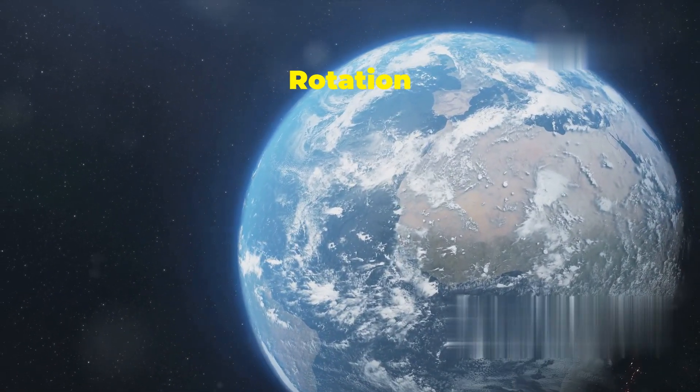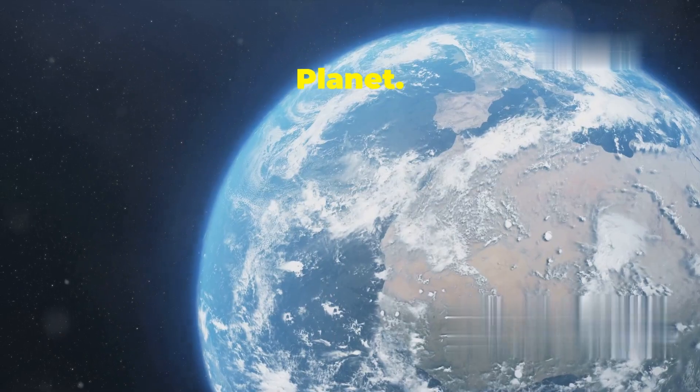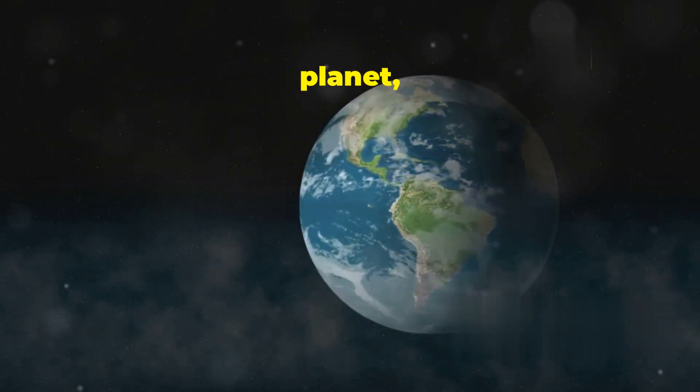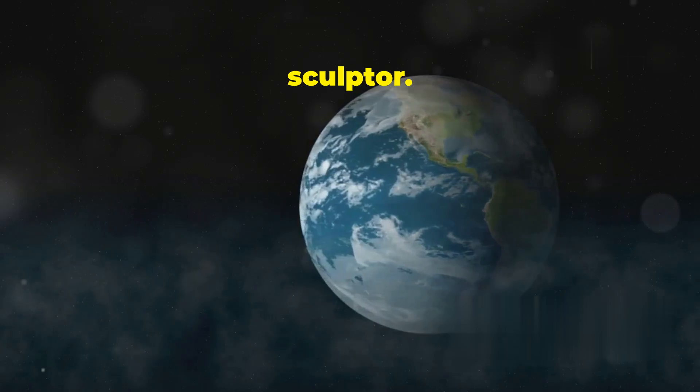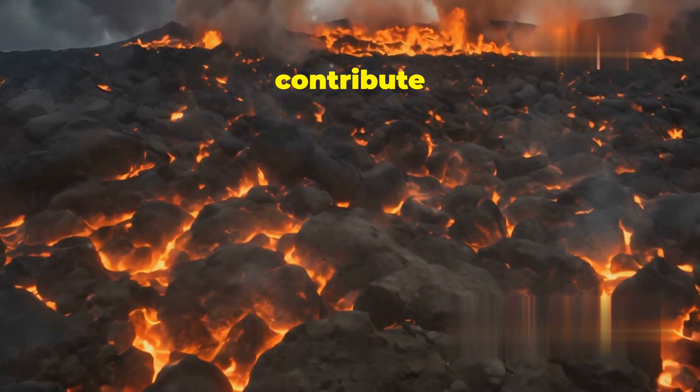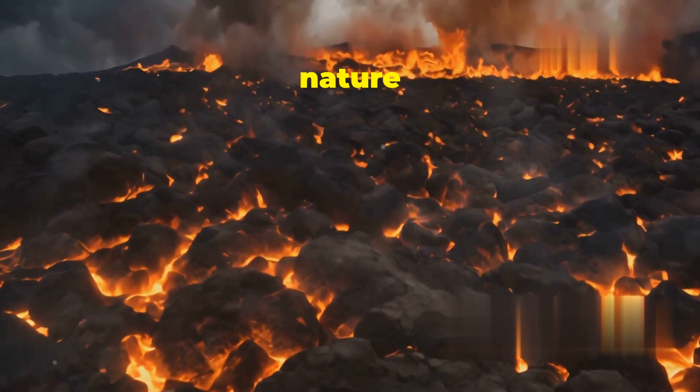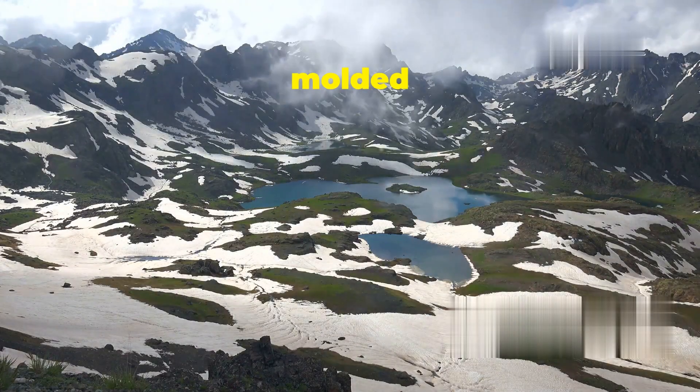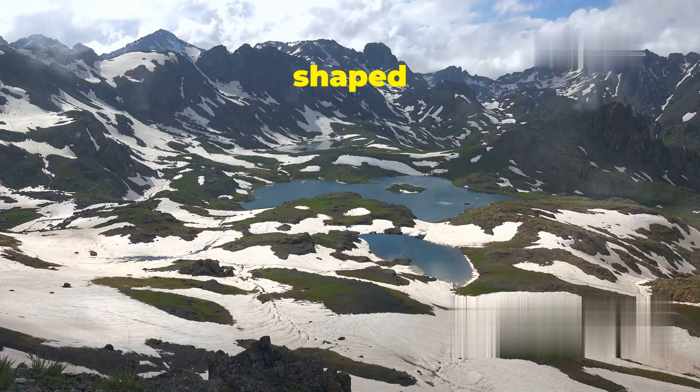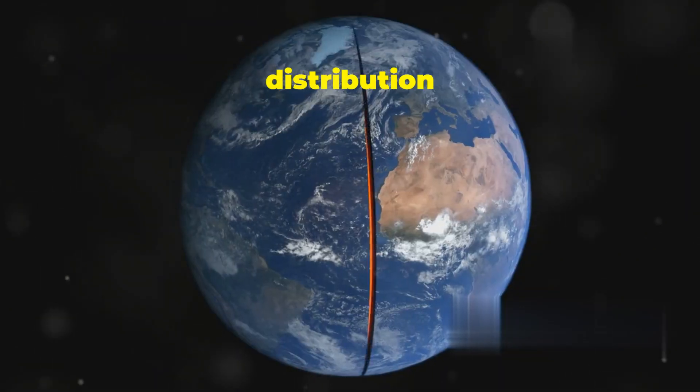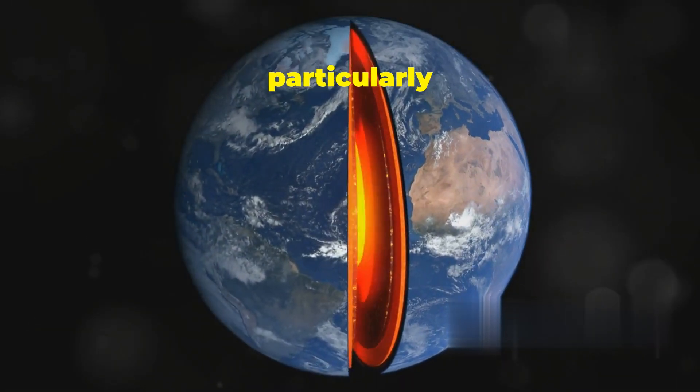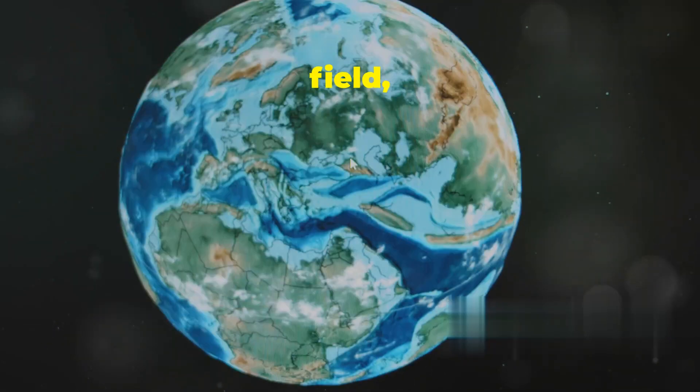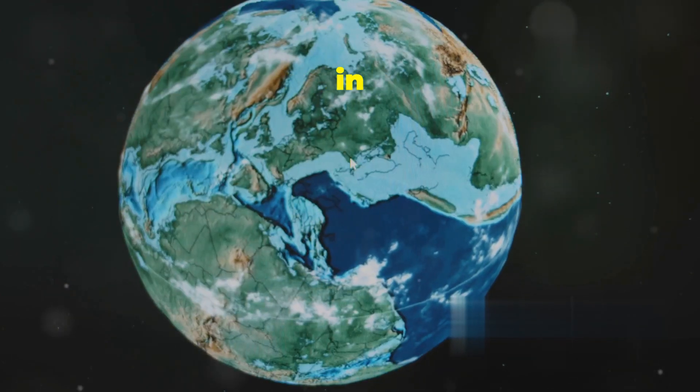While Earth's rotation plays a dominant role in shaping our planet, it is not the sole sculptor. Other forces, both internal and external, contribute to the dynamic and ever-changing nature of Earth's form. These forces, acting over millions of years, have molded mountains, carved valleys, and shaped the continents we know today. The uneven distribution of Earth's mass, particularly within the crust and mantle, influences the local gravitational field, creating subtle variations in the planet's shape.